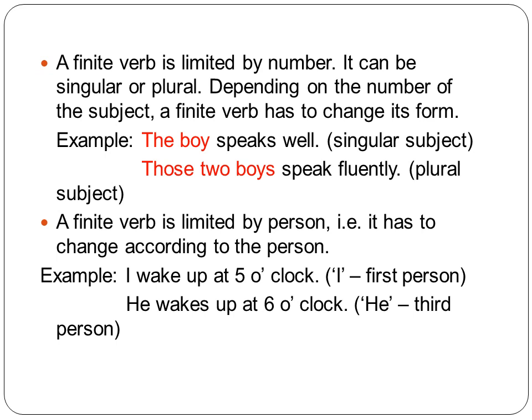A finite verb is limited by number — it can be singular or plural depending on the number of the subject, and a finite verb has to change its form accordingly. For example: 'The boy speaks well' — 'the boy' is a singular subject. 'Those two boys speak fluently' — 'those two boys' is a plural subject. So a finite verb is limited by number, totally depending on the number of the subject.